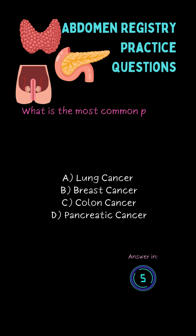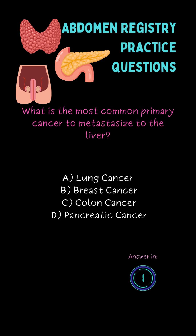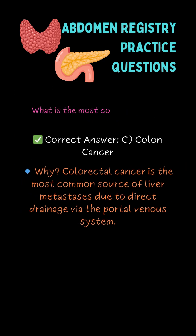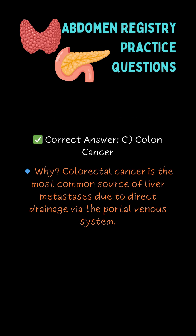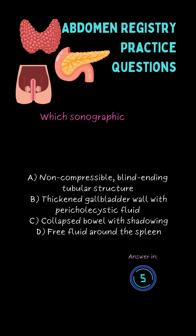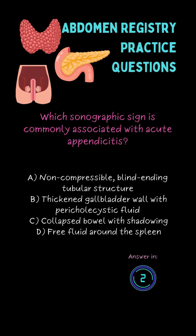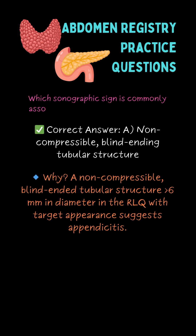What is the most common primary cancer to metastasize to the liver? Which sonographic sign is commonly associated with acute pancreatitis? A. A non-compressible blind-ending tubular structure.